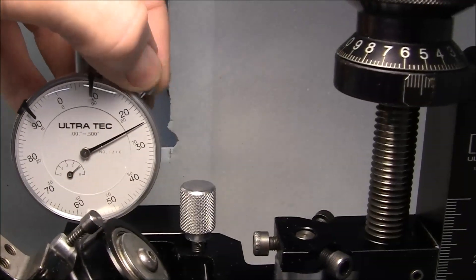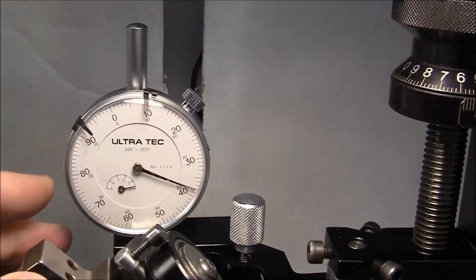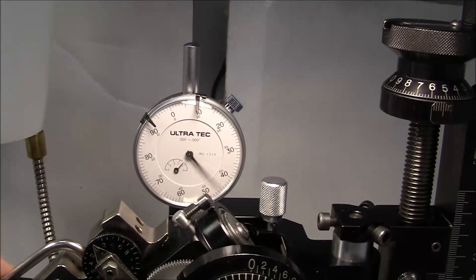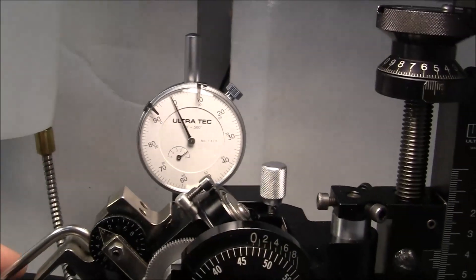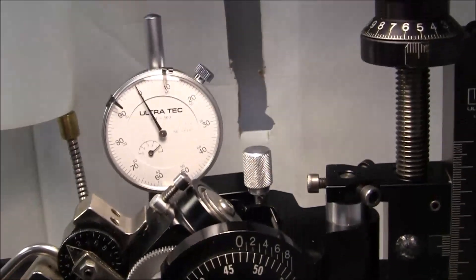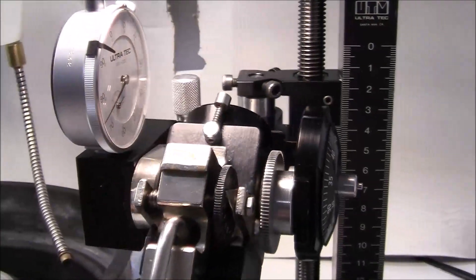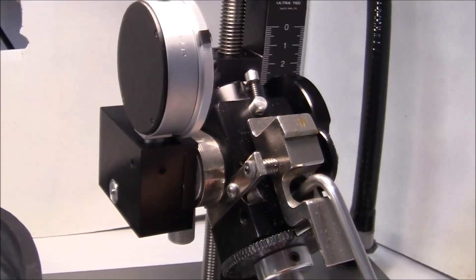Then I can adjust the lock nut. And there we have it. The dial indicator for your down position is installed on this Ultratech. It's pretty quick and pretty easy.